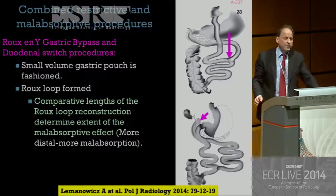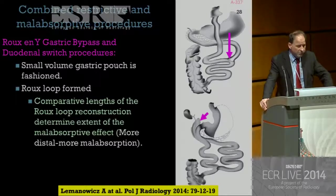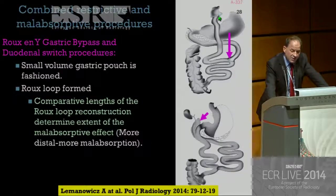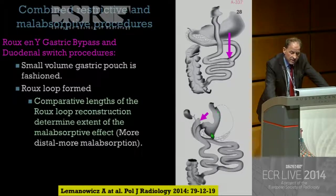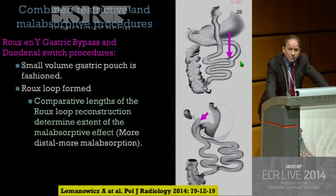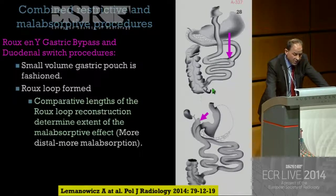The combined restrictive and malabsorptive procedures are very interesting and complex. The principle is that you have a restrictive component — a very narrow gastric tube such as a sleeve gastrectomy — combined with a Roux-en-Y bypass. The comparative lengths of the Roux-en-Y reconstruction determine the degree of the malabsorptive effect, as the lack of biliary and other enzymes for the majority of the flow causes a malabsorptive effect.